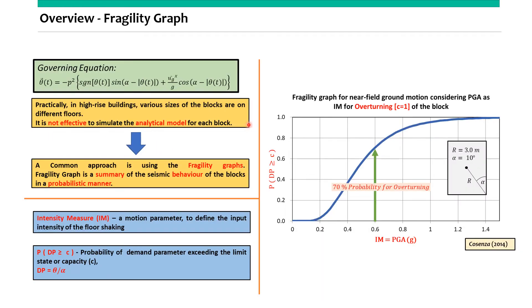In practice, it is not effective to simulate analytical models for each individual block, so fragility graphs are developed. A fragility graph is a probability graph dependent on the seismic parameter and the block parameters. It represents the probability of overturning — using such a graph, we can easily find the percentage probability of overturning.